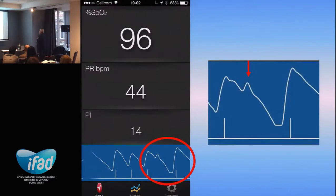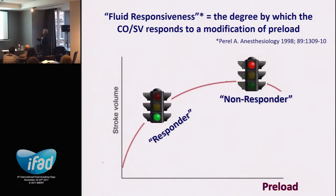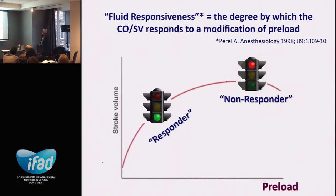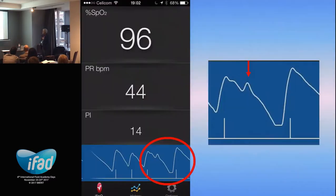We define this as fluid responsiveness: the degree by which cardiac output or stroke volume responds to a modification of preload. We do not want to give fluid to patients who would not respond, and we may consider giving fluid to patients who do respond.